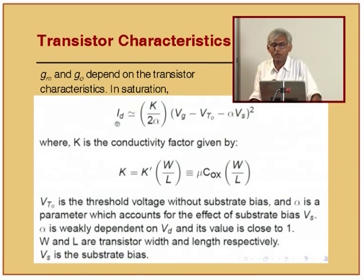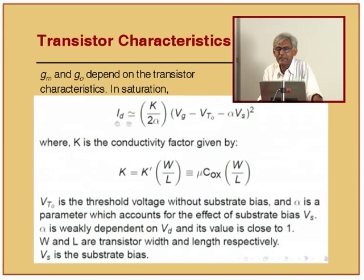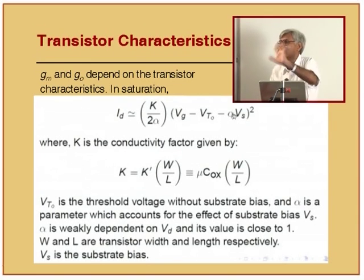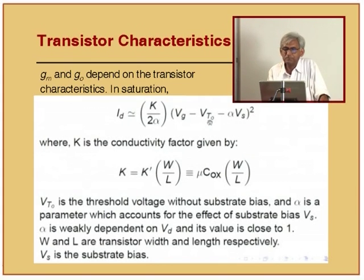With alpha equal to 1, ID equals (k/2)(VG - Vt) squared. Therefore gm equals dID/dVG equals k times (VGS - Vt). There is a somewhat qualitative fact we should understand: what is a designer's life? There are certain things you have control over and certain things you don't. All the equations, rather than writing them plainly algebraically, I will divide them so you can appreciate their impact on the design process.